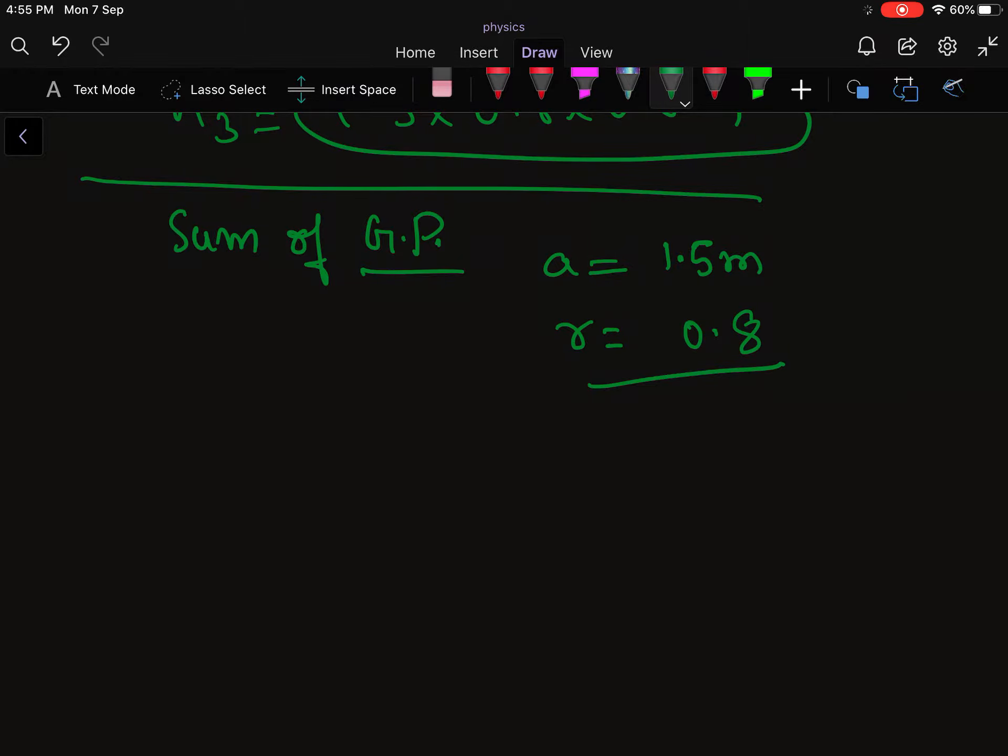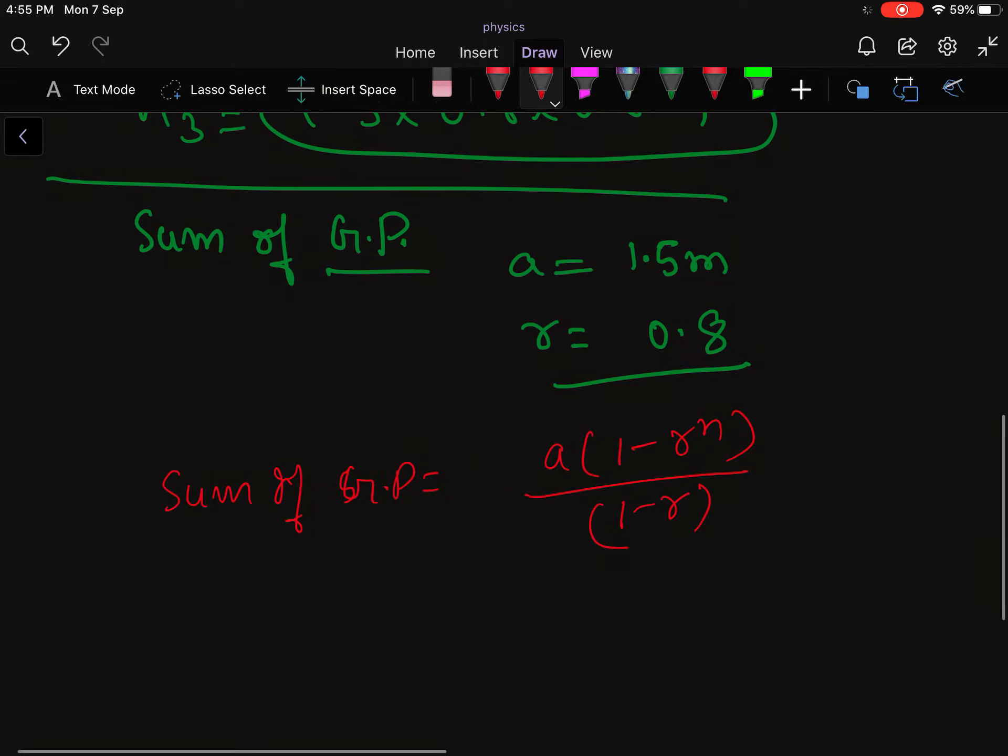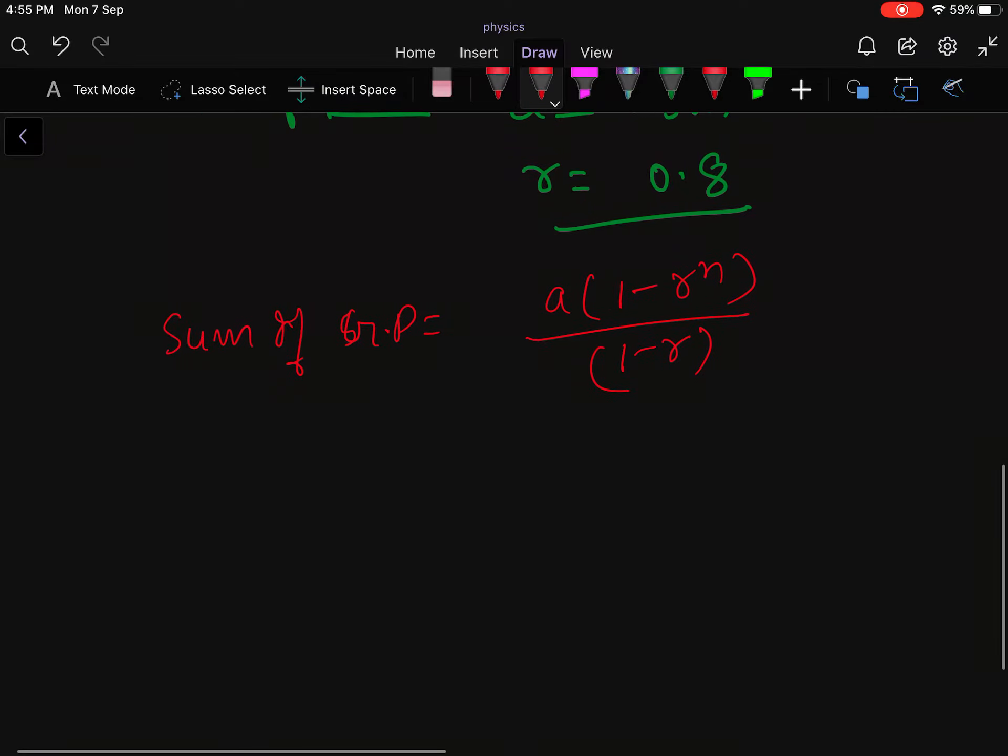So you have to find the total distance it will travel in a downward direction till it stops. Apply the formula of sum of GP: a × (1 - r^n) / (1 - r). We know it will bounce an infinite number of times, so n tends to infinity. As r is less than 1, r^n becomes 0.